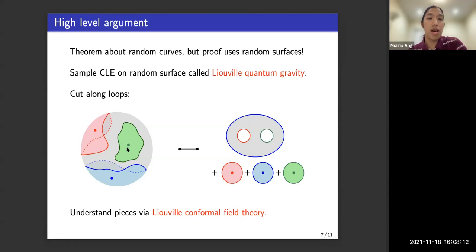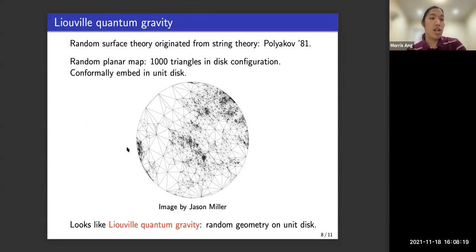So I just want to say a bit about Liouville quantum gravity and Liouville conformal field theory now. So what is Liouville quantum gravity? This is a model of random surfaces introduced by the physicist Polyakov in the 1980s in the context of string theory. If you have a one-dimensional string in space that evolves over time, then that traces out a two-dimensional surface in spacetime, which is why string theory might lead you to want to study random surfaces.